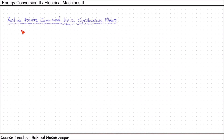Next, we will develop an equation for the active power consumed by a synchronous motor with respect to load angle. If we draw a typical vector diagram for a synchronous motor, suppose this is the supply voltage and this is Eb.